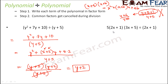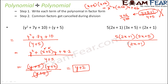Let's look at the next polynomial divided by polynomial example: 5 × (2x + 1) × (3x + 5) divided by (2x + 1). Can we cancel (2x + 1) from numerator and denominator? Yes, because the numerator is a product of three factors. So we cancel (2x + 1) and the result is 5 × (3x + 5).